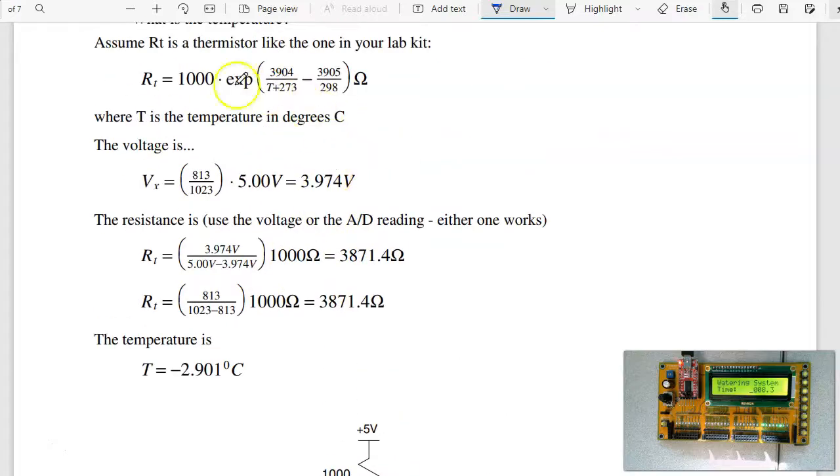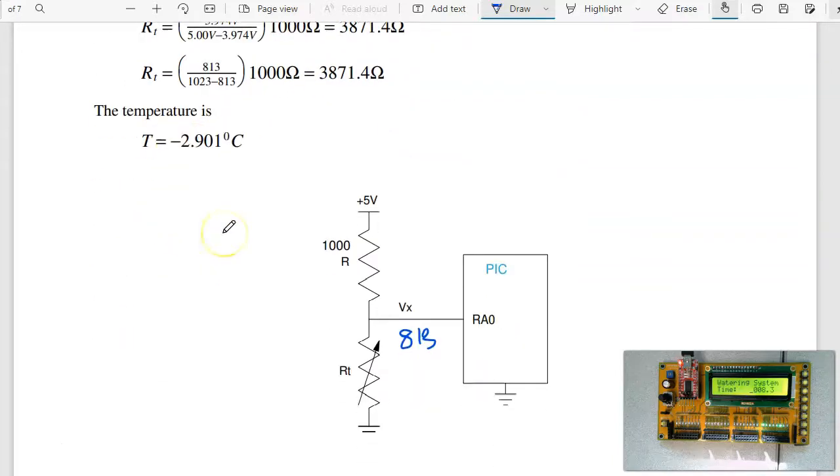To get the temperature, if I have a thermistor attached, I know the resistance, I can solve for T. So solving, I get minus 2.9 degrees Celsius. I can also measure temperature with the analog input.